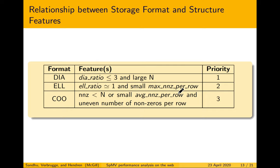Similarly, we built relationships between storage format and structural features for other formats. For ELL, if the ELL ratio (ELL elements divided by non-zeros) is close to 1 and the maximum non-zeros per row is small, ELL is optimal. For COO, if NNZ is less than N, the CSR format size becomes larger than COO, making COO preferred. When average non-zeros per row is small, CSR has high loop overhead, making COO optimal. Finally, uneven non-zeros per row leads to branch mispredictions in CSR, again making COO the preferred format.